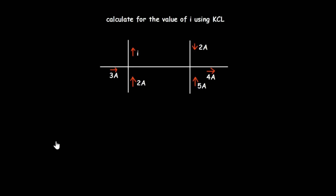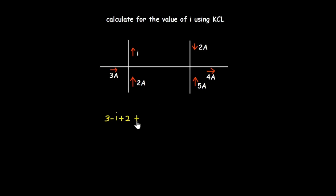For the next example, I'm going to apply Kirchhoff's current law by summing the current moving towards the node and moving away, setting it equal to zero. The 3 amperes are moving towards this node, so that's positive 3. Current i is moving away from this node, so that's minus i. The 2 amperes are also moving towards this node, so plus 2. On this side, the 2 amperes are moving towards the node, so plus 2. The 5 amperes are also moving towards the node, so plus 5. The 4 amperes are moving away, so minus 4. All this equals zero.